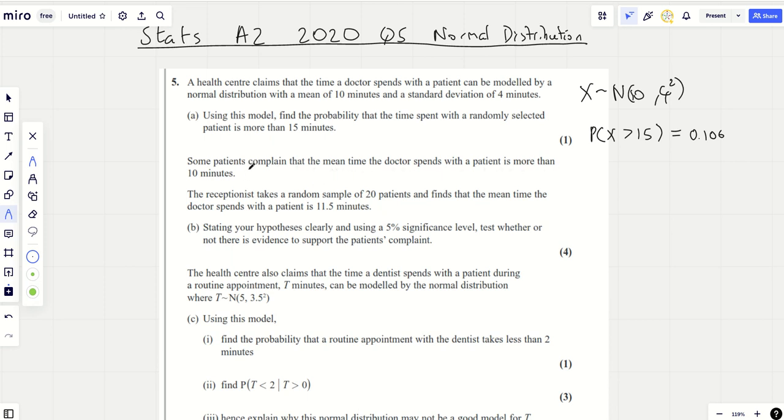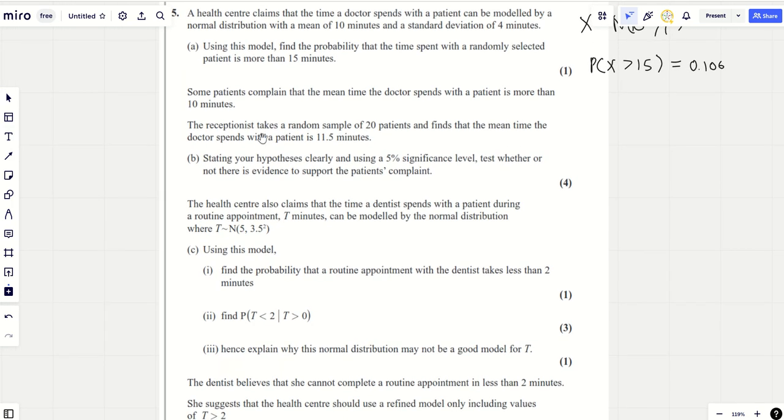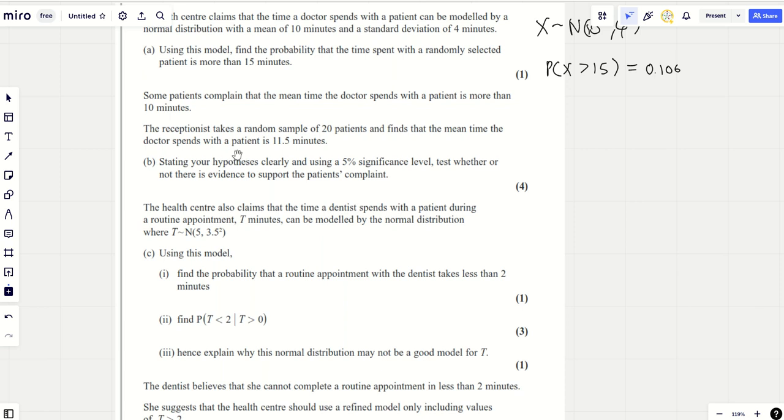Some patients complain that the mean time the doctor spends with a patient is more than 10 minutes. The receptionist takes a random sample of 20 patients and finds the mean time is 11.5 minutes. Let's do a hypothesis test to see whether there's evidence to support the patient's complaint. This is a nice hypothesis test in the sense that it's one-tailed. The null hypothesis is mean equals 10, the alternative is that the mean is greater than 10. We're looking at x bar is a normal distribution with mean 10, but the variance is 4 squared divided by the sample size of 20, which means sigma equals 4 over root 20.